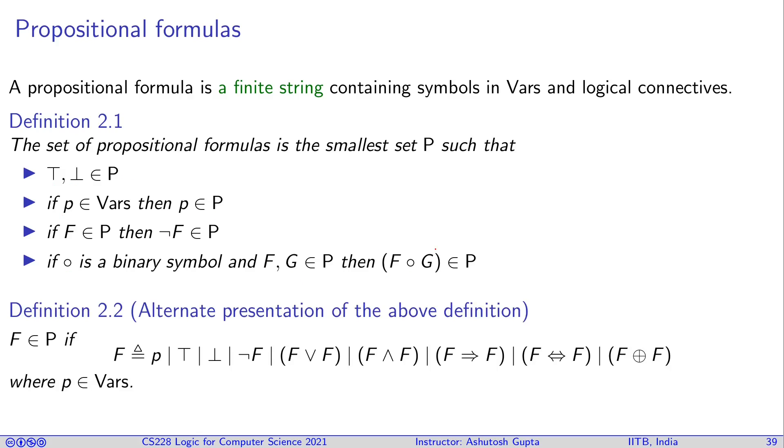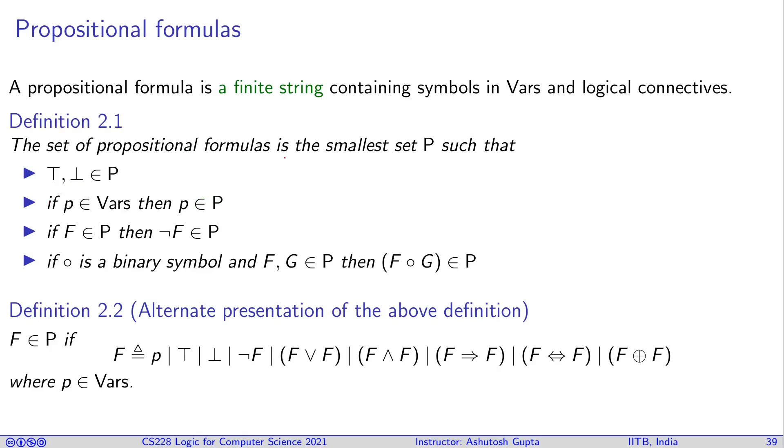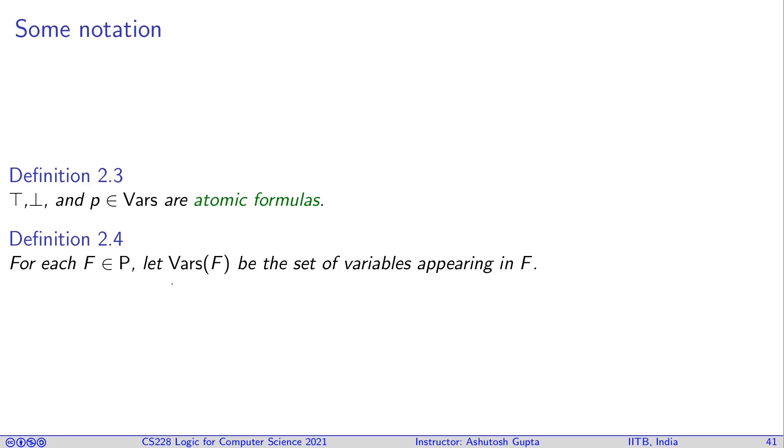If you know how to write formal grammars, this particular definition can be written as definition 2.2, where your f is defined as this grammar. We say true, false, and p as atomic formulas; they cannot be subdivided again. This definition is very clear. For each formula f, let vars(f)—so vars(f) is basically if you give f to this function vars, it returns the set of variables appearing in f. The way f is defined, remember that f is always a finite string in this definition, so this will always return a finite set of variables. Just for understanding what strings are and what vars does.